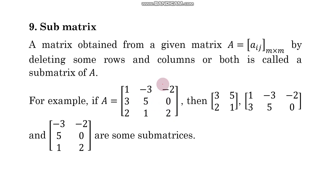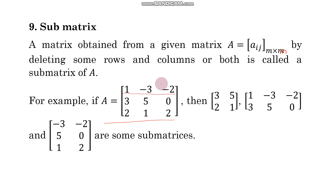Now, sub matrix. A matrix obtained from a given matrix A = [a_ij] of order m by n by deleting some rows, columns, or both is called a sub matrix of A. For example, if you delete the first row and third column from matrix A, you will get the sub matrix with elements 3, 5, 2, 1. Similarly, removing the last row gives a matrix of order 2 by 3, and removing the first column gives another sub matrix. All these resulting matrices are sub matrices.